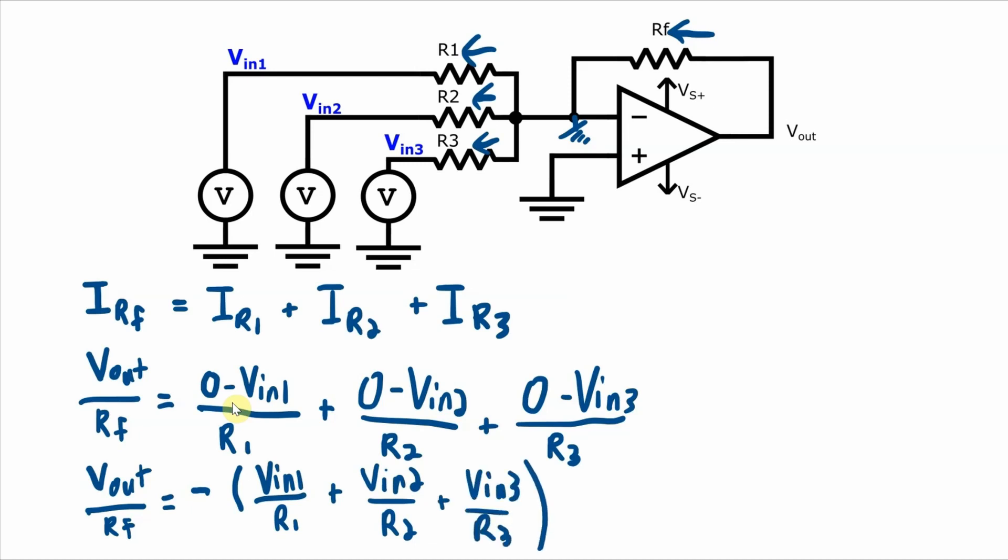And of course, I have this negative sign outside of this expression. And that negative sign is indicating, well, that is the reason that this is an inverting amplifier. Now, if all of the resistors are the same value, then we can just cancel out all of those resistors. And we get Vout is equal to the negative of the sum of my inputs.